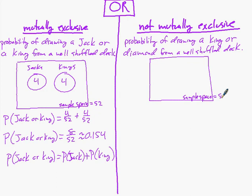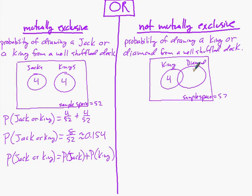Now if we talk about a not mutually exclusive situation: we have our sample space of 52 cards. We can have a king — there are four kings. We can have a diamond — there are 13 diamonds in a pack. But there is a possibility of having both, so there will be an overlap in the Venn diagram. Remember, there's one card which is both: the king of diamonds.